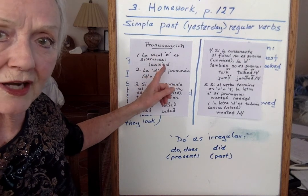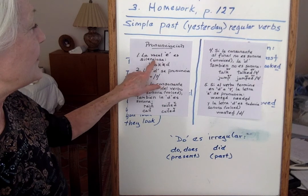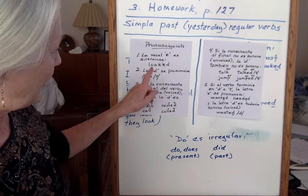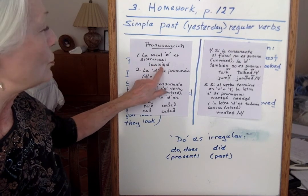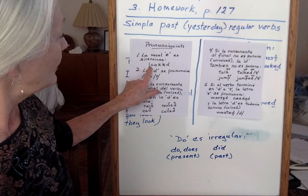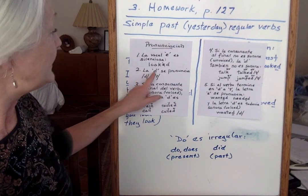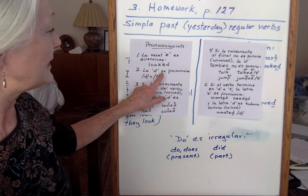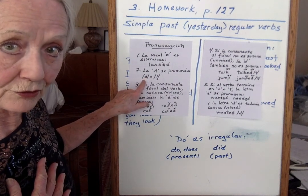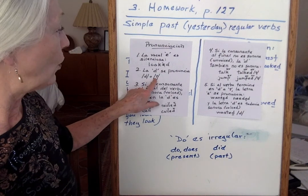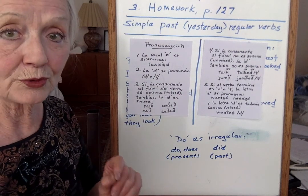What we have here is pronunciation — pronunciación. La vocal I es silenciosa en el pasado. Por ejemplo: look plus -ed — no digo 'lookit', no. Yo digo 'looked' — una sílaba. Now, la letra -d se pronuncia two ways: voiced D or unvoiced T. Hay dos sonidos por -d.